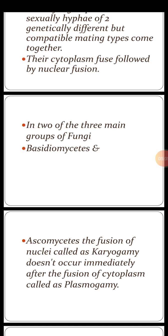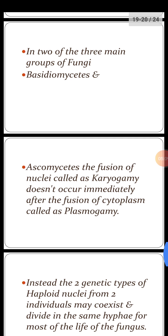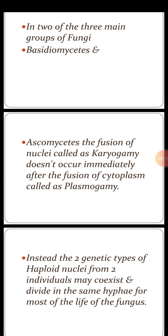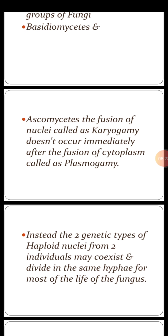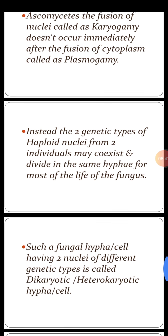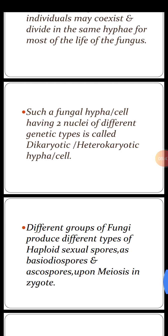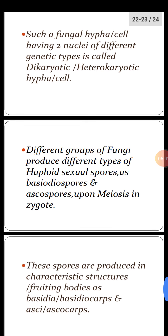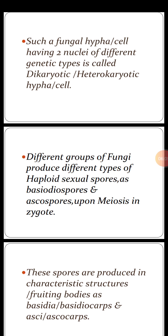In two of the three main groups of fungi — basidiomycetes and ascomycetes — the fusion of nuclei is called karyogamy. It does not occur immediately after the fusion of cytoplasm, which is called plasmogamy. Instead, the two genetic types with haploid nuclei from two individuals may co-exist and divide in the same hypha for most of the life of the fungus. Such a fungal hypha or cell with two nuclei of different genetic types is called dikaryotic — di means two, karyotic means nucleus — or heterokaryotic, because hetero means different.